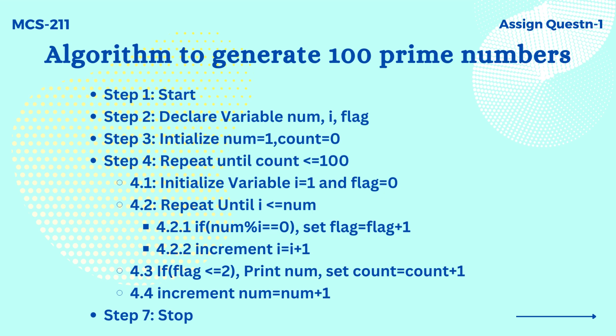Then, we check whether flag is equal to 2, if yes print num and increment count by 1. After that num increments by 1 and the above process continues till count reaches 100.